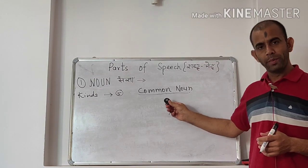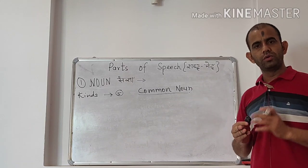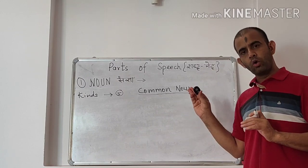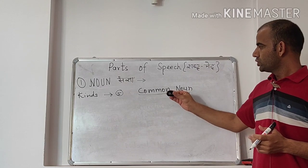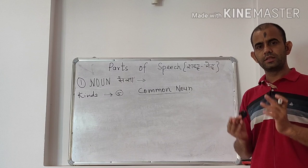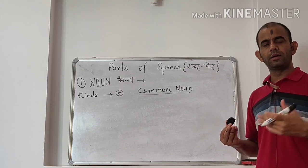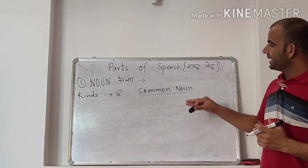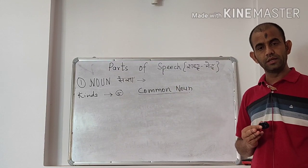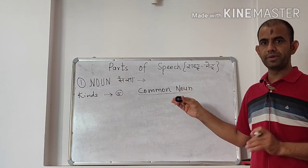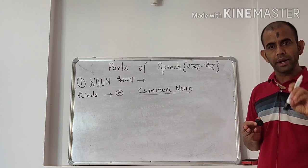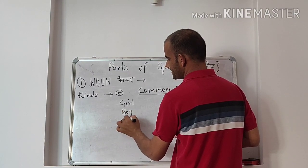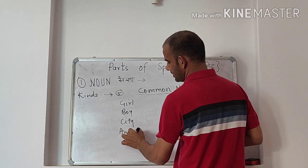We are going to study common noun. What is a common noun? Common noun is a name, I repeat, common noun is a name given commonly to a person or thing. This name is not for a particular thing or person. For example, girl, boy, city, animal.